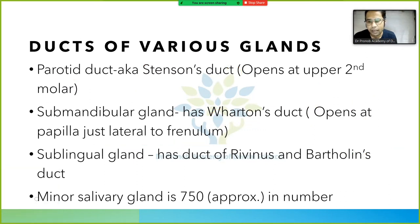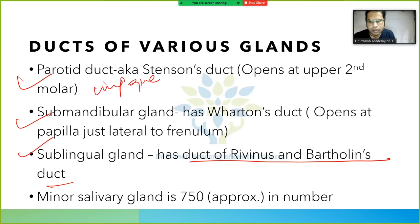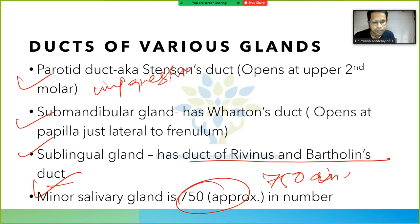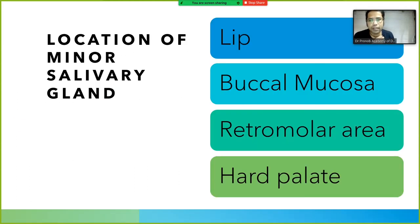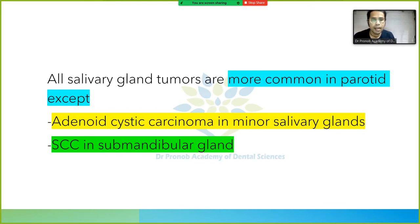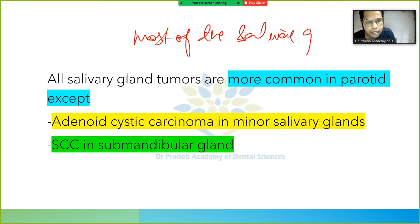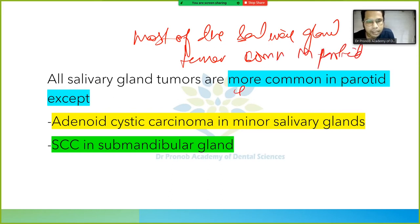The sublingual gland has the duct of Rivinus and Bartholin's duct. Minor salivary glands are approximately 750 in number, located in the lip, buccal mucosa, retromolar area, and hard palate. Most salivary gland tumors are more common in the parotid gland.